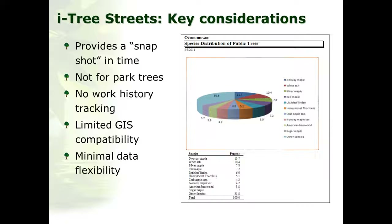There are a couple of things to keep in mind with iTreeStreets. It provides what we call a snapshot in time of a street tree resource — designed to look at current benefits, not project into the future like iTree Design. It's also not meant for assessing benefits of park or forest trees; it's designed for street trees. It does not have the ability to track work history or generate work orders, so it's not an asset management tool.